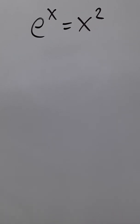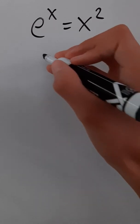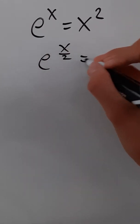e to the x is equal to x squared. We just have to solve for x. So let's start by raising both sides to the one half power. So we get e to the x over two equals x.